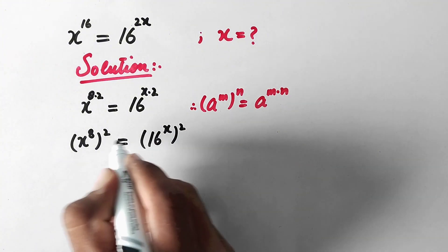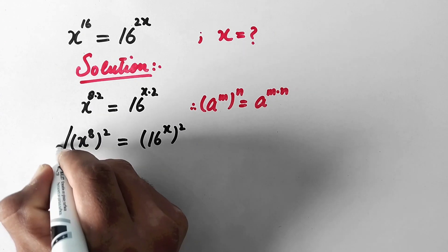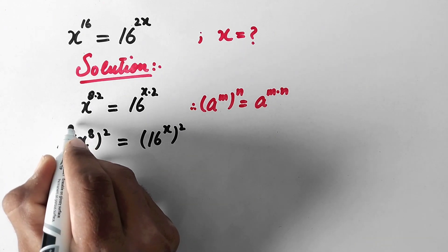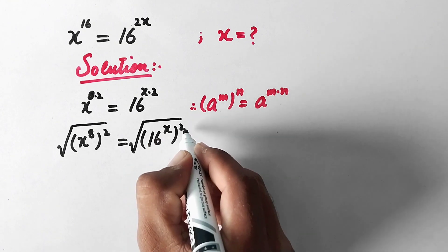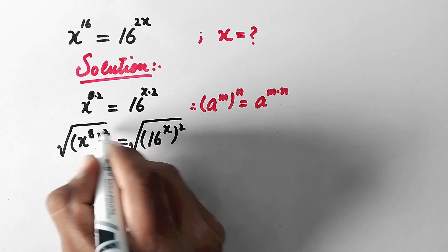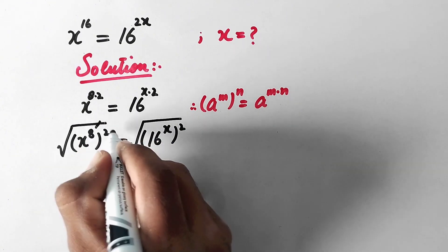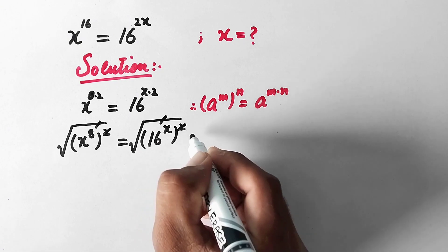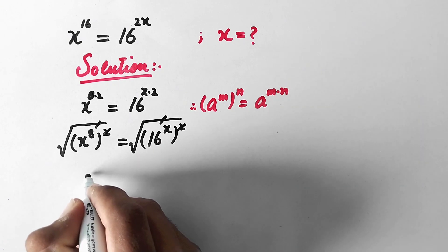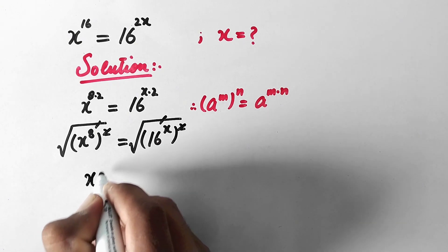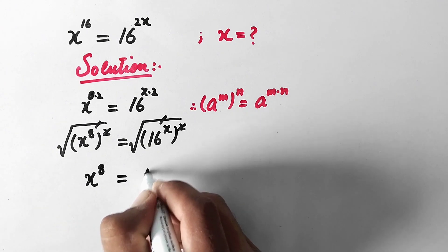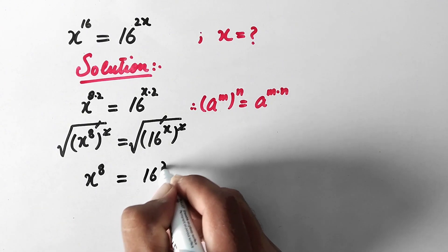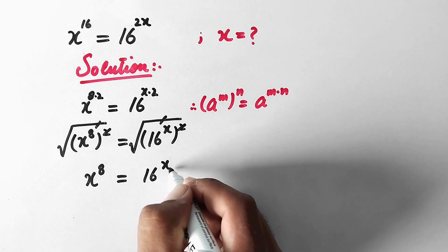Next we will take the square root on both sides of the equation. These squares will be cancelled out by the square roots, and the remaining equation is x to power 8 is equal to 16 to power x.